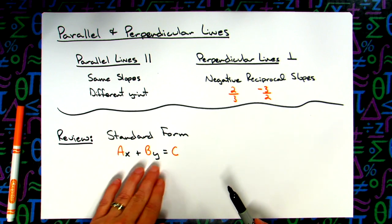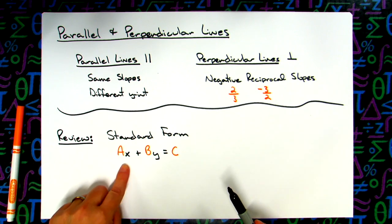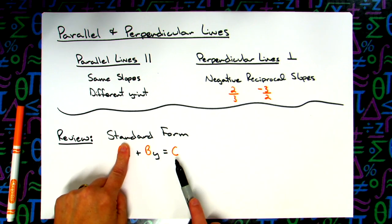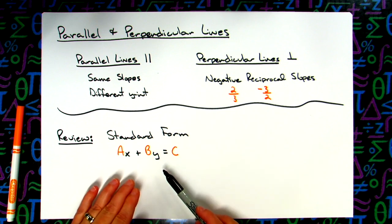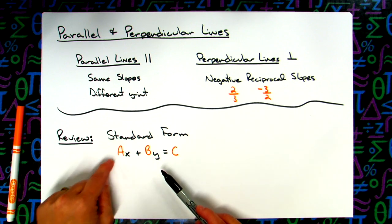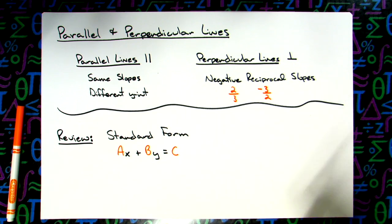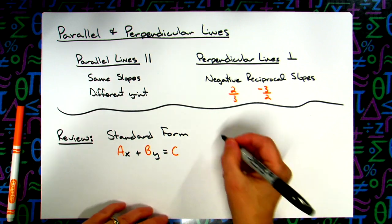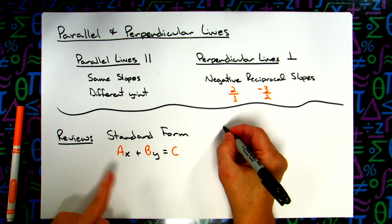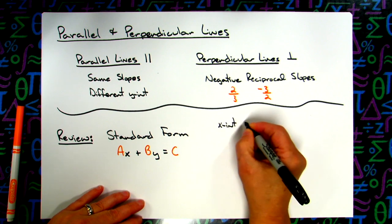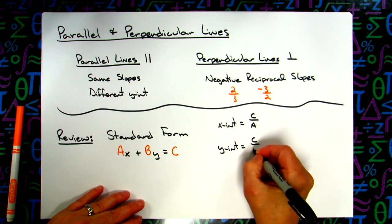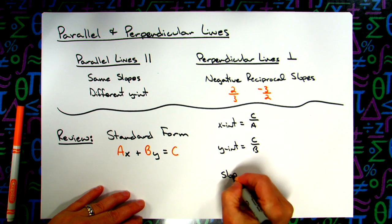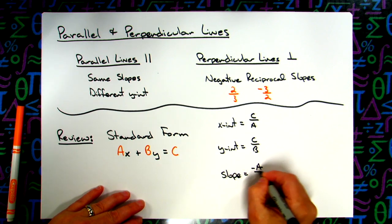Similarly, when you want the y-intercept, x is zero, which knocks that term out, meaning the y-intercept is c over b. And if you solve this as a literal equation for y, you discover that the slope is negative a over b. So the helpful hints: x-intercept is c over a, y-intercept is c over b, and slope is negative a over b.